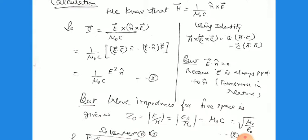Using the vector identity A cross (B cross C) = B(A·C) − C(A·B), we can write E cross (n̂ cross E). This gives 1 divided by μ₀c multiplied by [(E·E)n̂ − (E·n̂)E]. But here E·n̂ = 0 because the direction of E and the direction of propagation are perpendicular to each other.